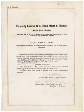Article 5 of the United States Constitution describes the process whereby the Constitution, the nation's frame of government, may be altered. Altering the Constitution consists of proposing an amendment or amendments and subsequent ratification.